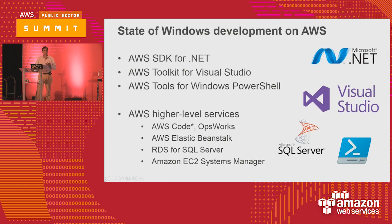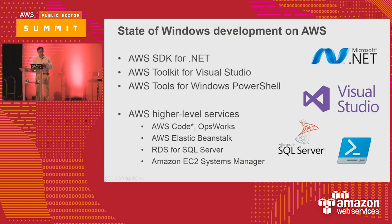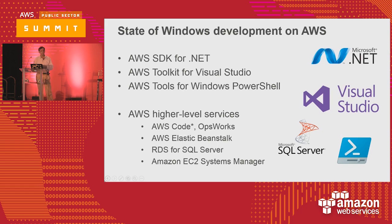Normally you would use Beanstalk for maybe two-tier architecture or simpler applications. Then you have our RDS — relational database as a service — the SQL Server, Microsoft SQL Server. And then for remote execution of maybe PowerShell scripts, you could use our EC2 simple system manager.